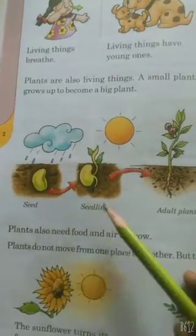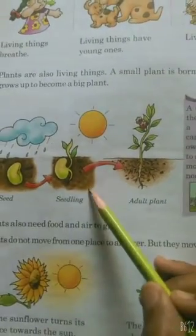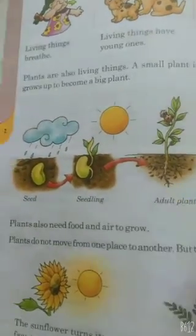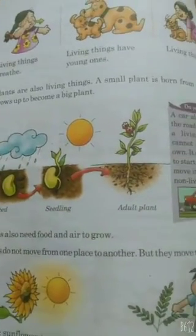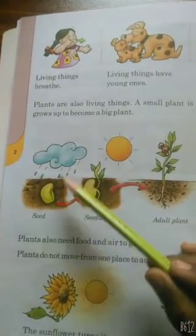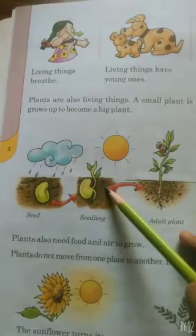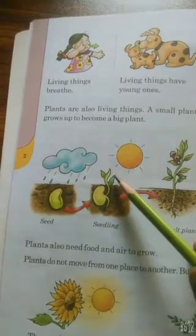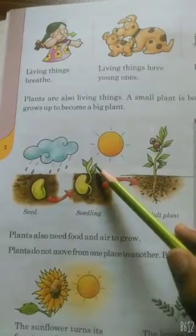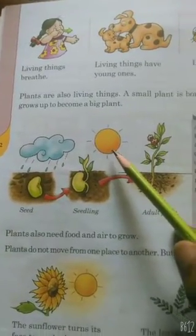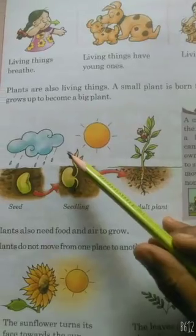A seed grows into a seedling, and a seedling then becomes an adult plant. When you sow a seed in the soil and water it, it becomes a seedling — a baby plant comes out of it. After some days, having its food like air, water, and sunlight, it grows further.